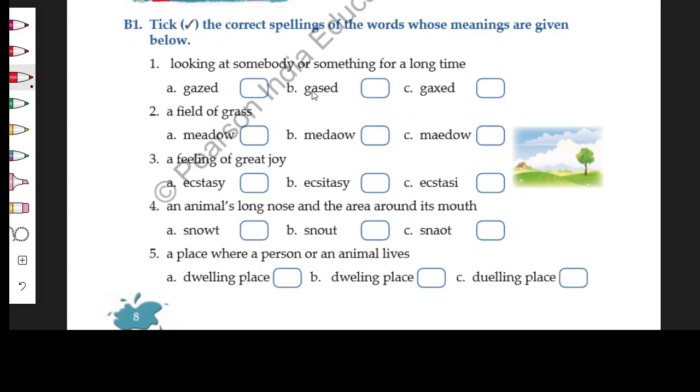After you come, based on the definition, which word matches, you have to mark that word. Now again, you have to decide which spelling out of three is correct. For example, looking at somebody or something for a long time - well, that is called gaze.